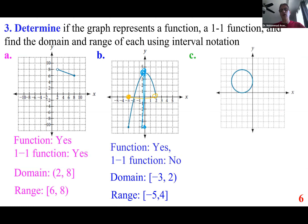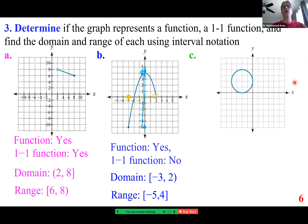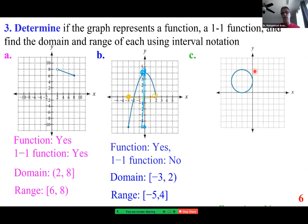The last graph: is this a function? No. Is this a one-to-one function? No. It fails the vertical line test and also fails the horizontal line test. The domain goes from negative 4 to 0. The range goes from 0 to 4.